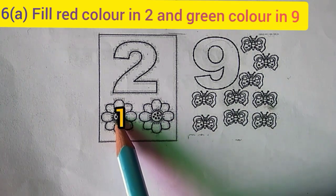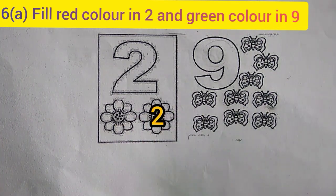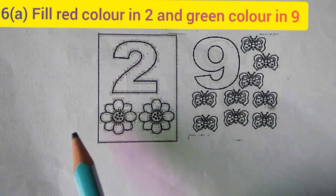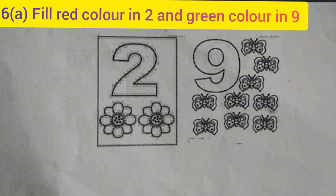Let us count first. 1, 2. There are 2 flowers, so this number is 2. Next, we count the butterflies. 1, 2, 3, 4, 5, 6, 7, 8, 9. So this number is 9.